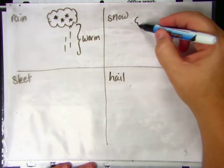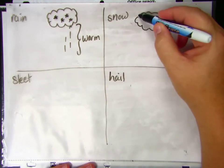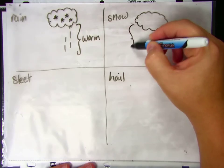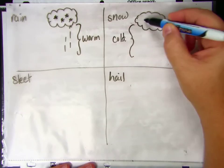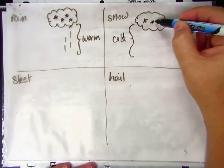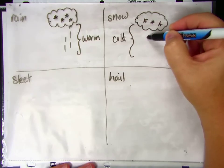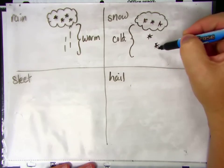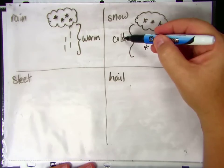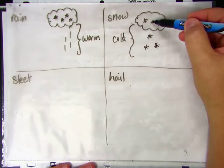Snow is just the opposite. The air below the cloud is actually cold. So those ice crystals that fall from the clouds remain as ice crystals. That's why we have snow, because the cold air just leaves the ice crystals as they were up in the clouds.